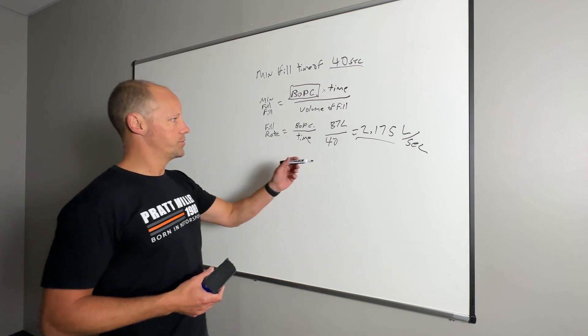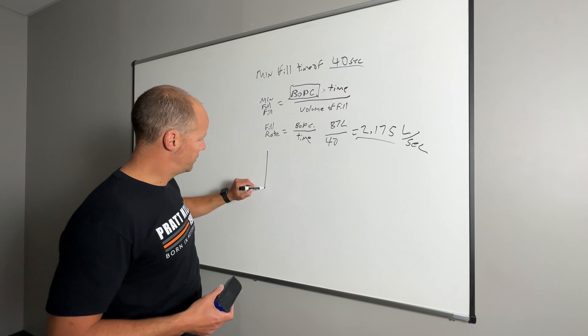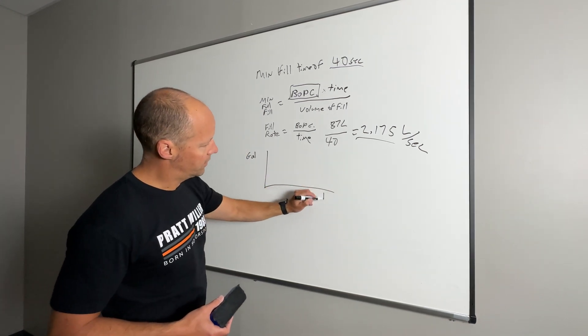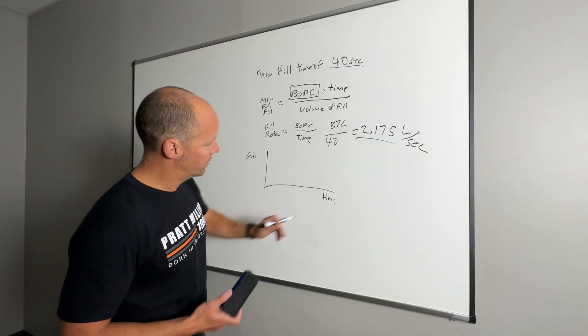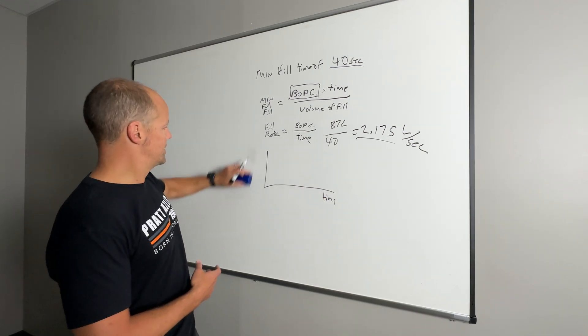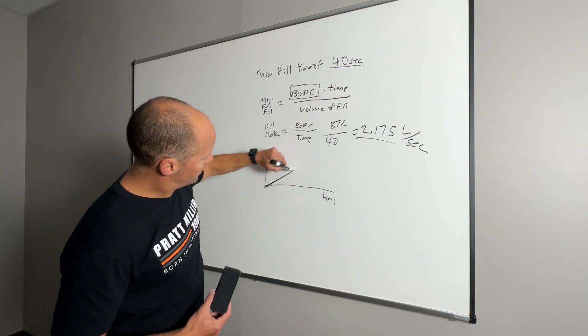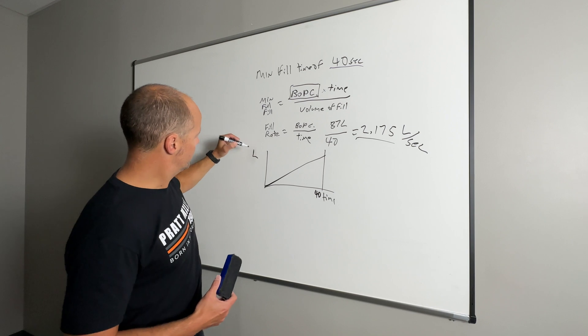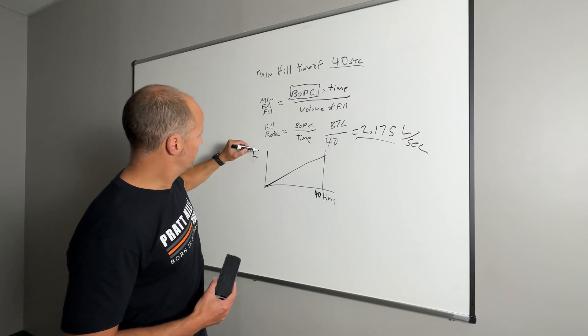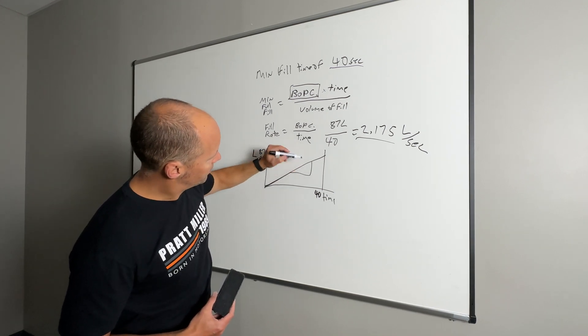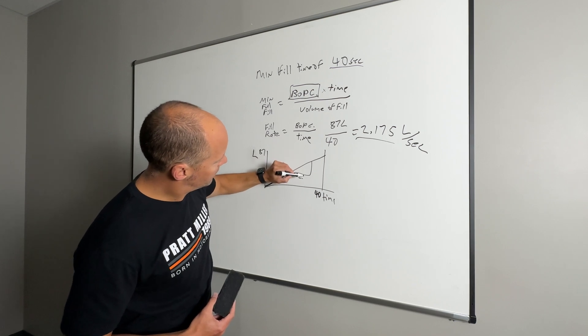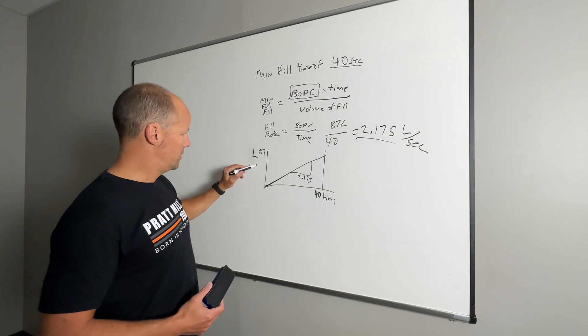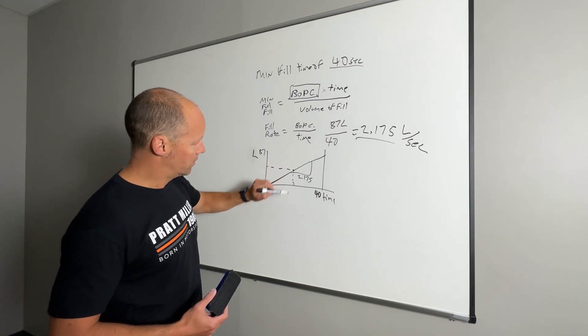So from this, you can see a quick chart where we have liters and we have time. And we have this, this would be 40 seconds, and then this would be 87 liters. And then the slope of this would be 2.175, right? So anywhere when you need less than 87 liters, you kind of go up here, go here and go here.